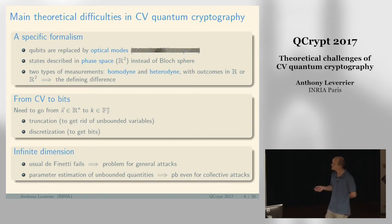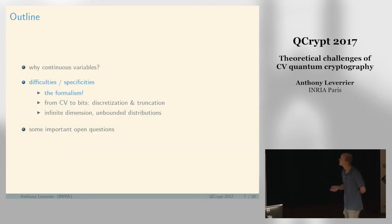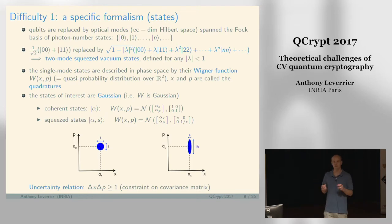How you go from continuous variables to bits to get a secret key out. And then I will mention the difficulties linked to infinite dimension.